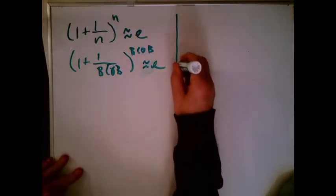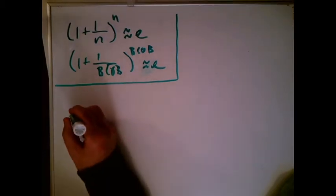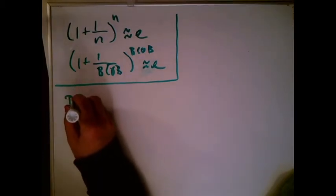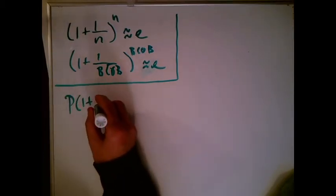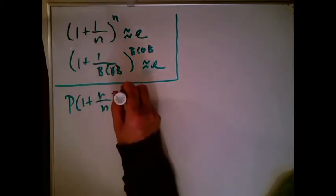So starting here, what we want to do is look at our ordinary compound interest formula. Remember that's what we have here, we have P and then 1 and then plus R over N to the Nt.